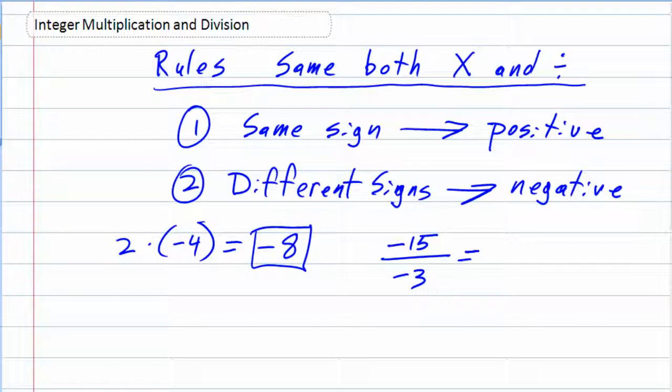So my answer is actually going to be positive, even though I've got those two negatives there, because the signs are the same. So 15 divided by 3 is 5, and that's going to be a positive 5, again, because the signs are the same.